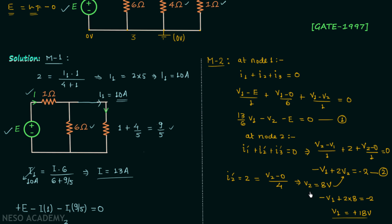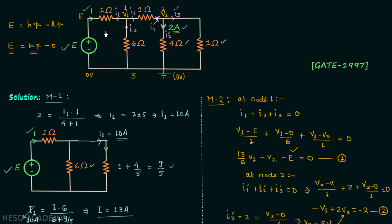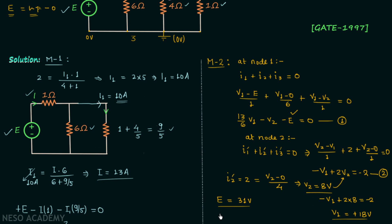With V1 and V2 known, substituting into equation 1 gives voltage E equal to 31 volts. From the network, I equals minus I1, where I1 equals (V1 minus E) divided by 1. Substituting V1 equal to 18 and E equal to 31 gives current I equal to 13 amperes. We have obtained the same values using method number 2.